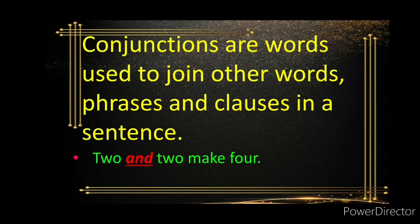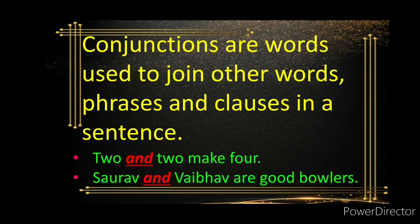Examples: Two and two make four. Another example: Saurav and Bevav are good ballers. Saurav is a good baller. Bevav is a good baller. Here, the conjunction 'and' is used to join similar statements.